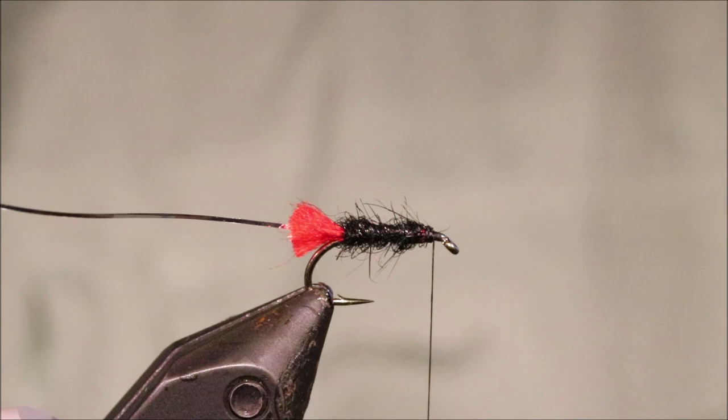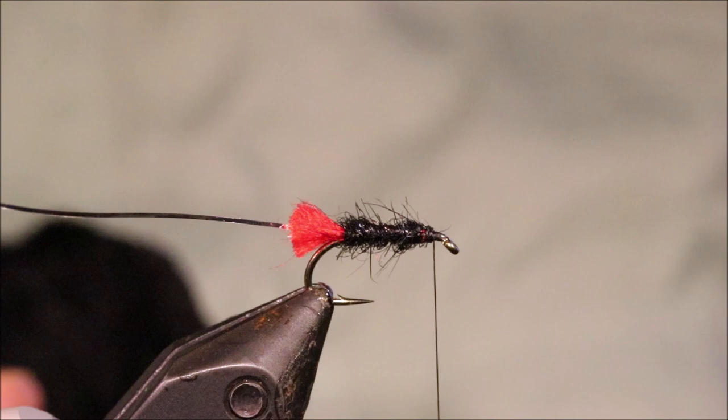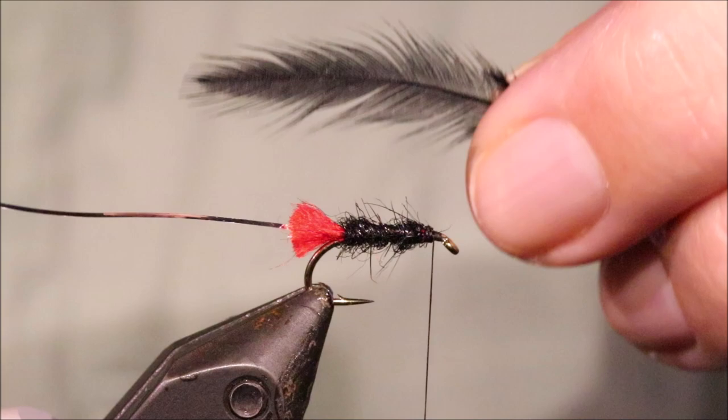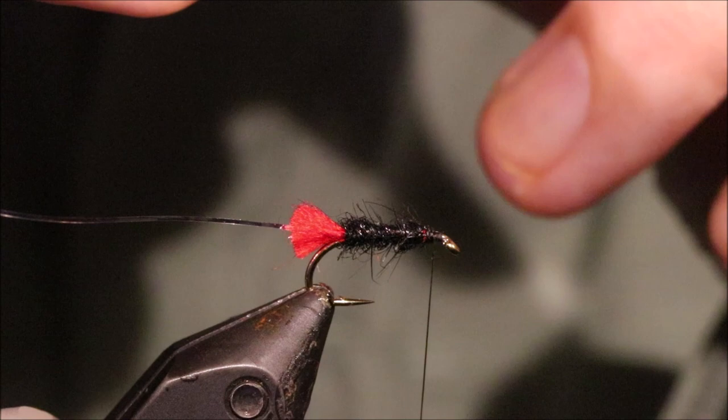Ready for my body hackle. I'm using just a wee cheap Chinese Indian hen neck dyed black. And it can be a bit of a struggle sometimes to get a good, a decent sized feather where the barbs are the right length for a fly smaller than about a ten.